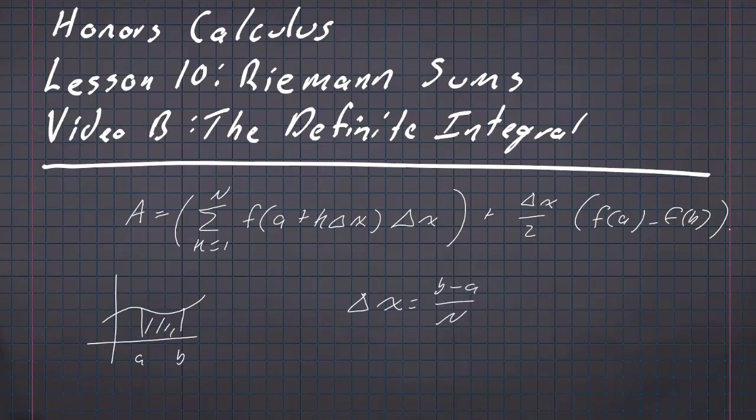We take the interval from a to b and divide it up into n pieces. And what we said when we defined this was that as you get larger values of n — as you divide the interval into more pieces — you get more accurate approximations of the area.